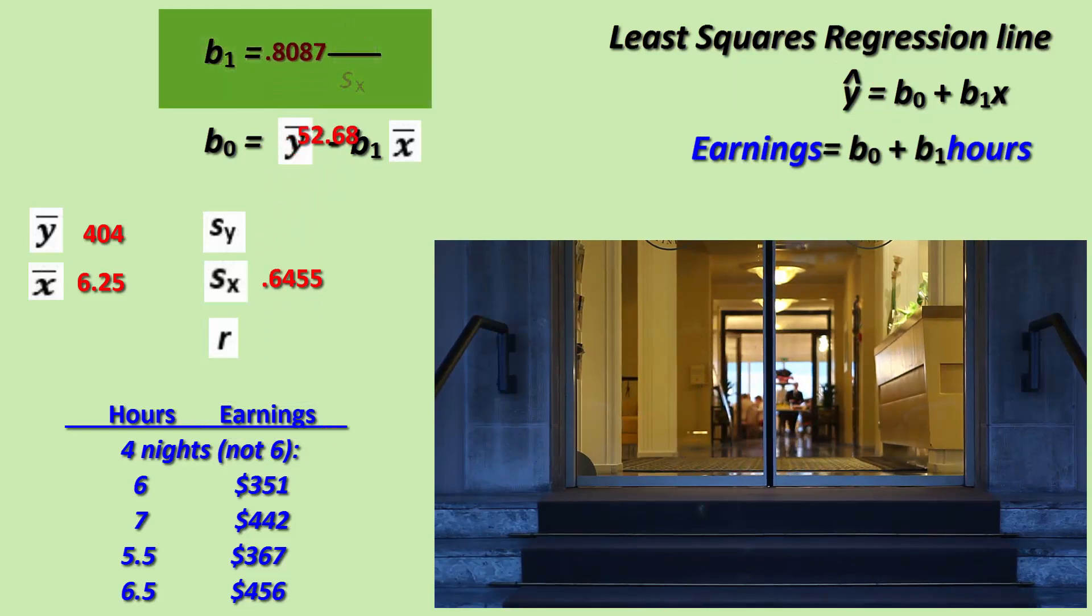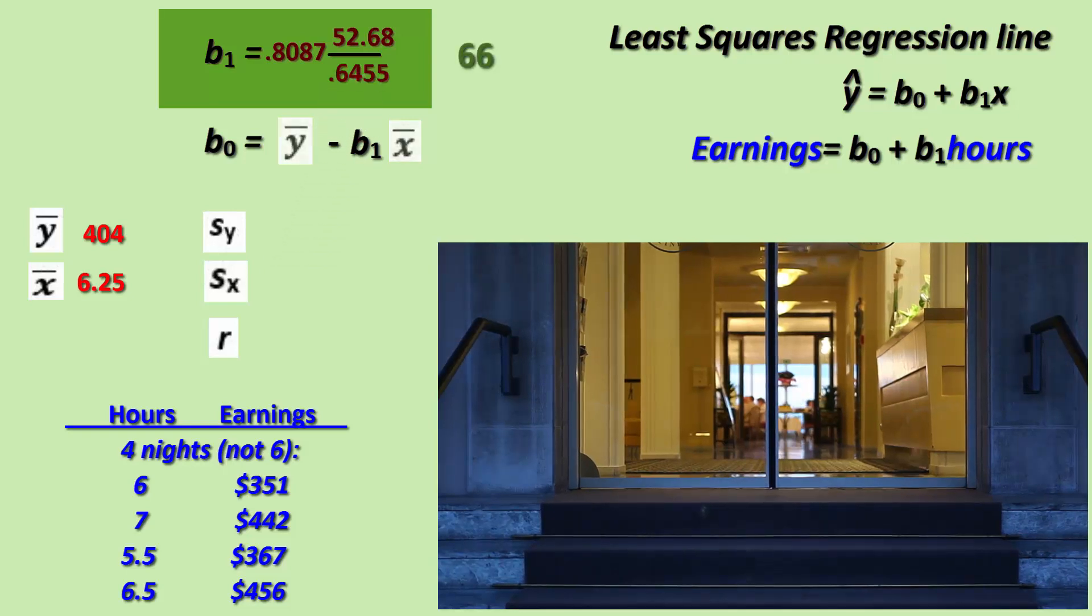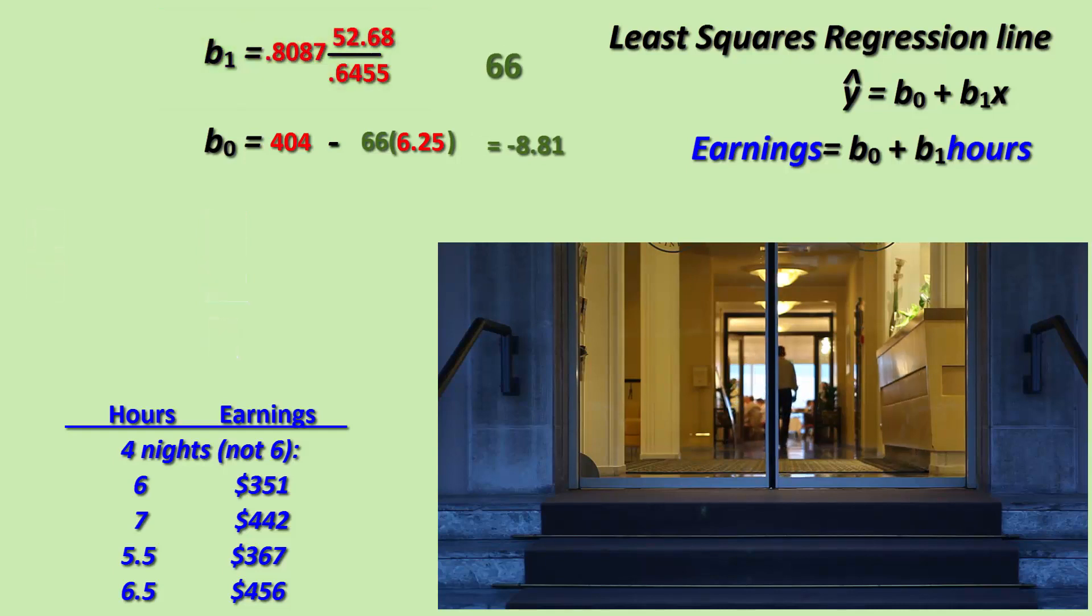Slope is the R value times the standard deviation of Y over X, so this is our slope. Y-intercept is found to be negative eight dollars and 81 cents, hence the least squares regression line is predicted Y equals negative 8.81 plus 66.05X.